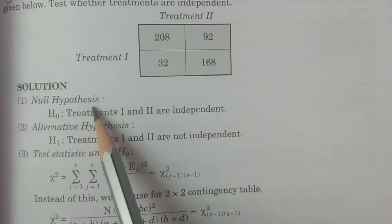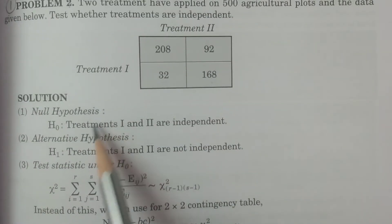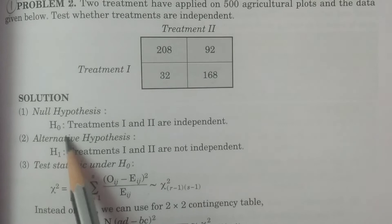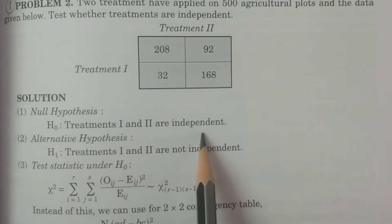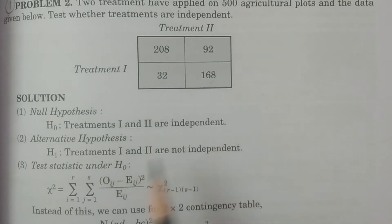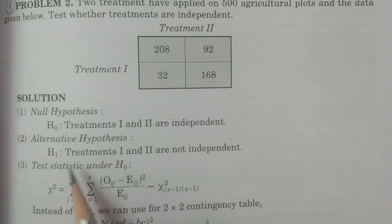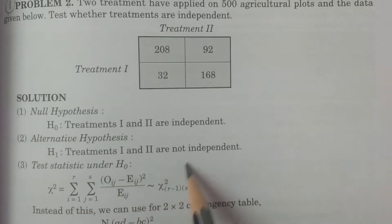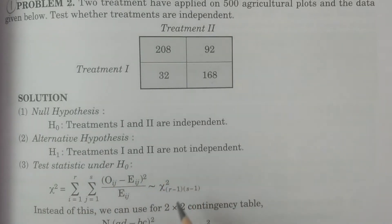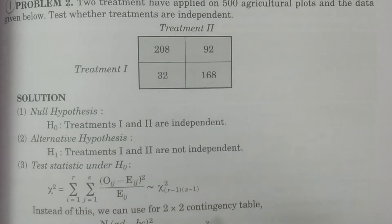First, null hypothesis: H0 - treatments one and two are independent. Alternative hypothesis: H1 - treatments one and two are not independent.